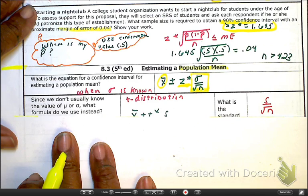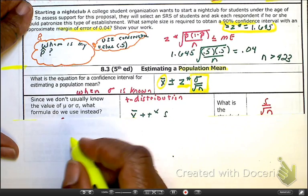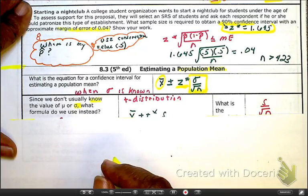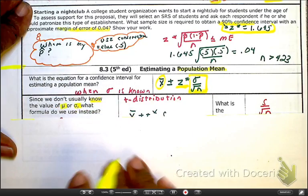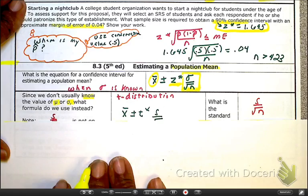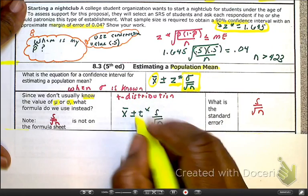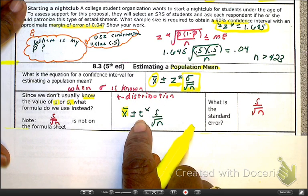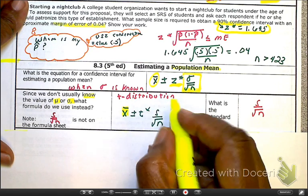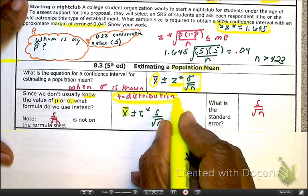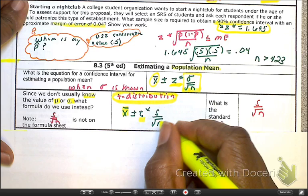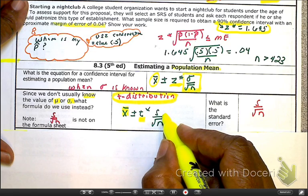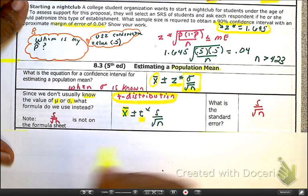But what if we don't know the value of sigma, or mu for that matter, but we're more concerned about sigma? What formula do I use instead? Well, the formula that I use instead is right here, our x bar, which is still our point estimate, plus or minus, here a critical value now, we're talking about a T, which means we are using a T distribution now. So here's a T star times, oh check it out, there is our standard deviation for our sample, and of course, divided by the square root of n.